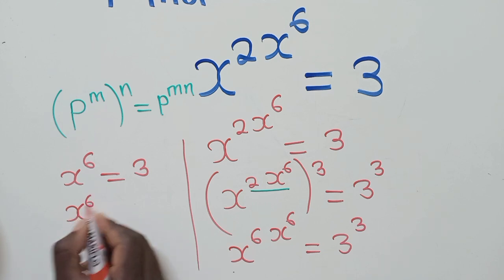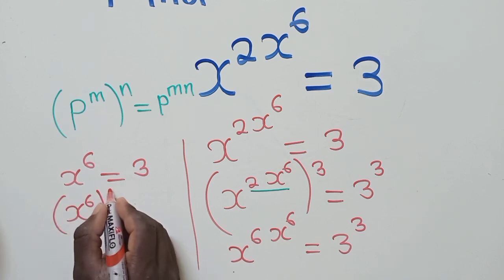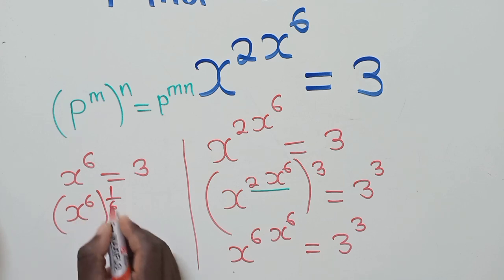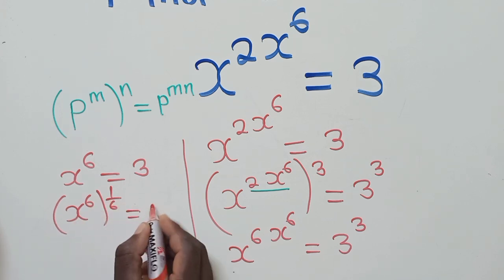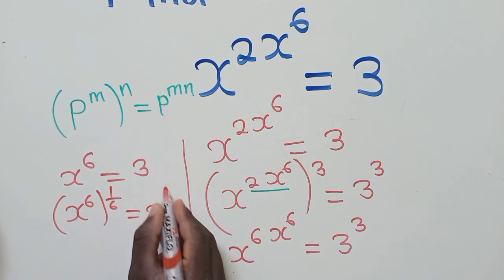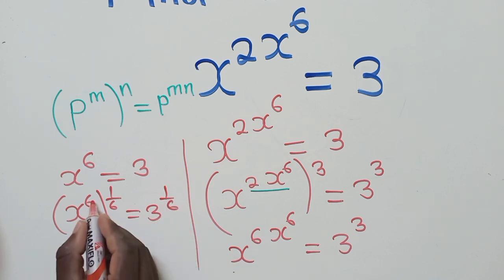So we solve for x. We put or we apply the inverse of this, which is 1 over 6, both sides, so power 1 over 6, such that 6 and 6 here will cancel.